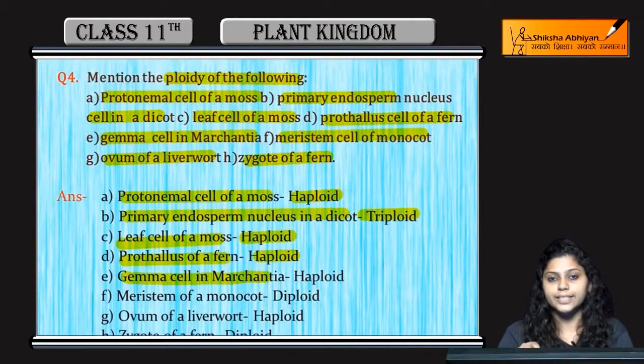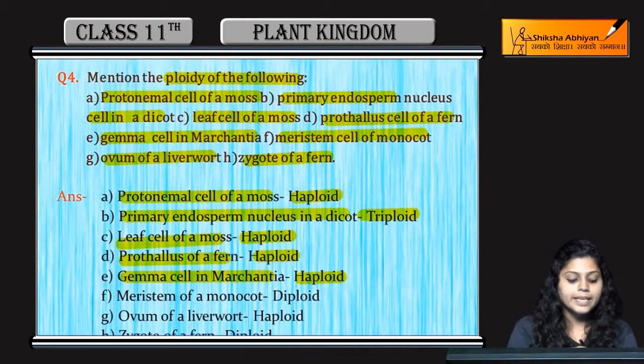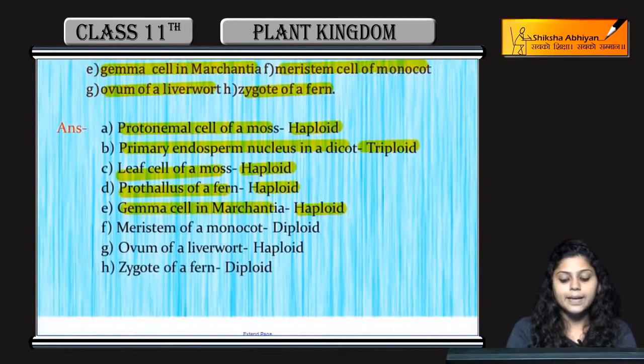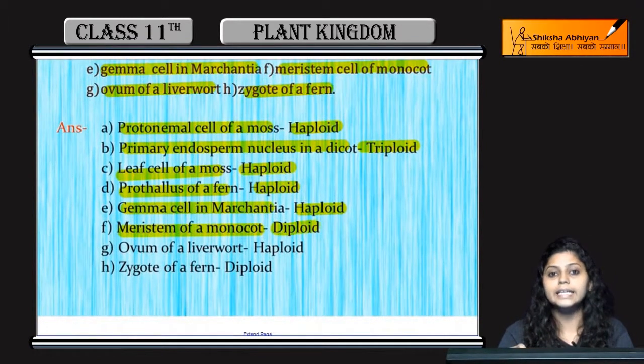Gamete cells in Marchantia — they are also haploid. Next is meristem of a monocot — they are diploid.